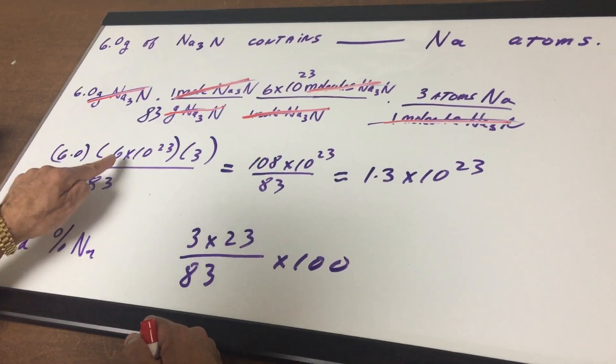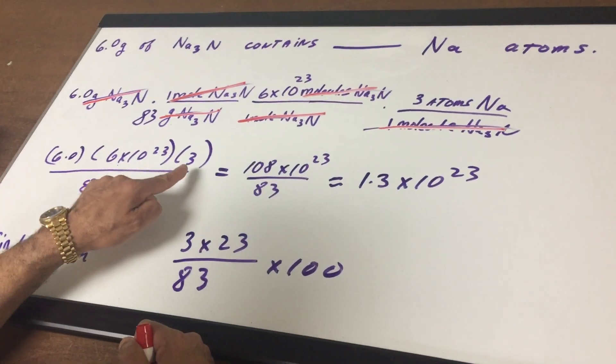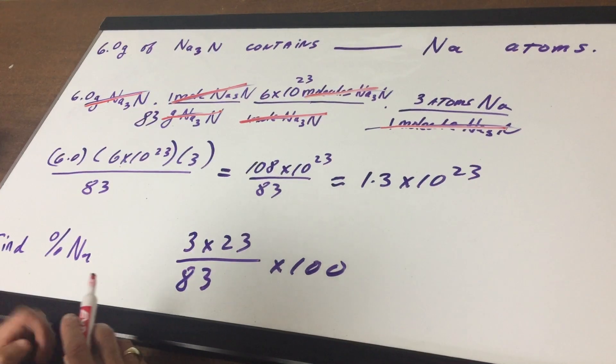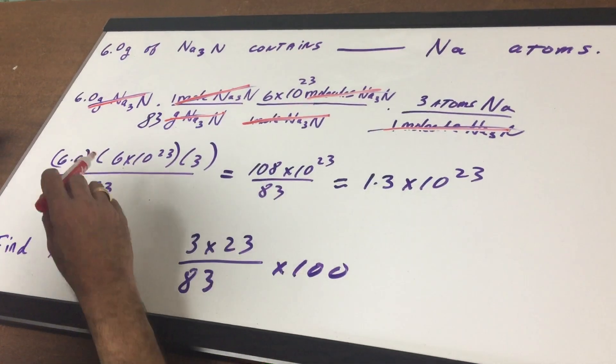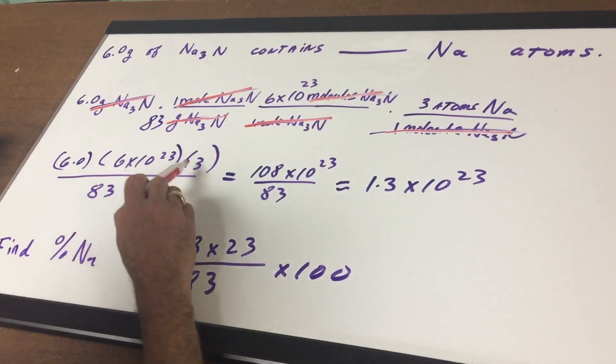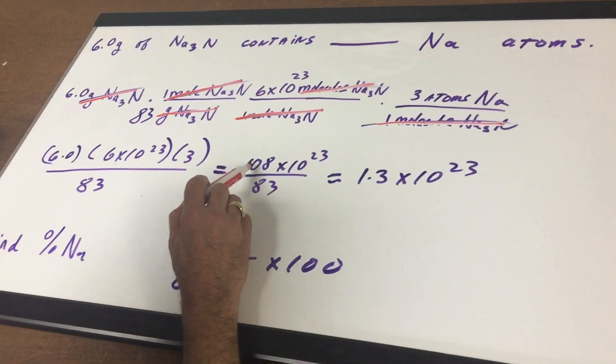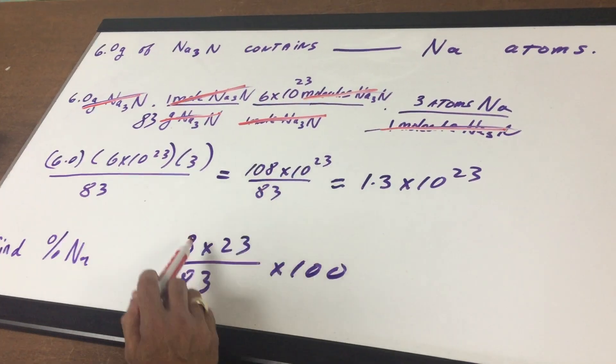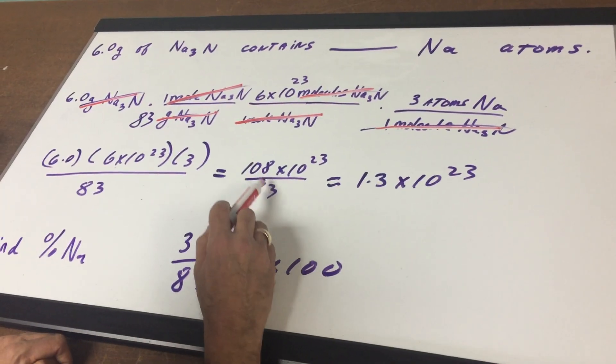So we're going to take 6 times 6.02 times 10 to the 23rd times 3 over 83. Now I'll show you a nice way that I did this without a calculator. 6 times 6 is 36 times 3 is 108 and keep it 10 to the 23rd over 83. And then once I got it down to this,